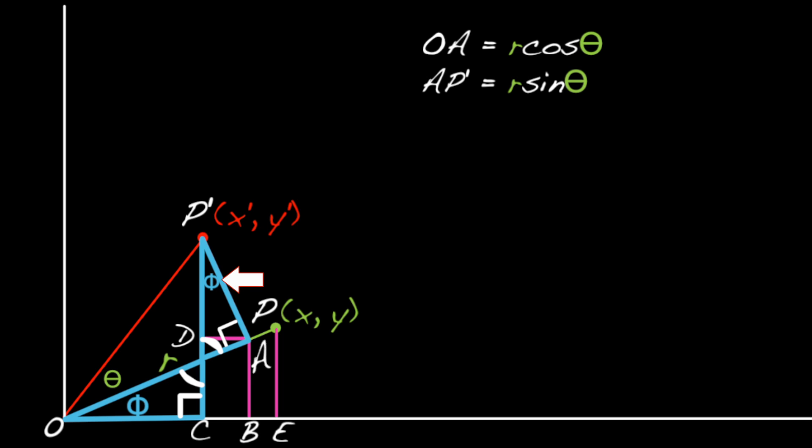Now we're set. One thing we're looking for is this distance, OC, because that's X prime. As we observed earlier, OC is equal to OB minus BC.